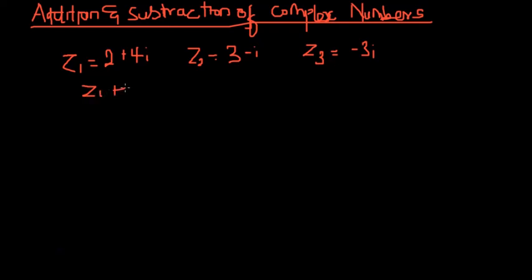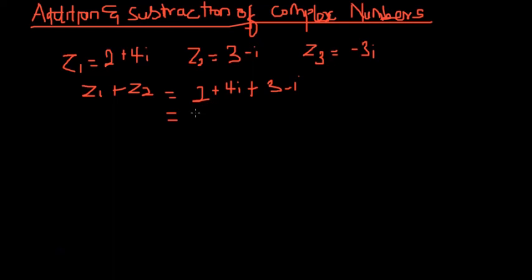So let's say we are adding z1 and z2. We have z1 plus z2, which will be two plus four i plus three minus i. I like to separate the real and imaginary parts. Two and three are the real parts, and four i and minus i are the imaginary parts. Two plus three gives us five, and four i minus i gives us positive three i.